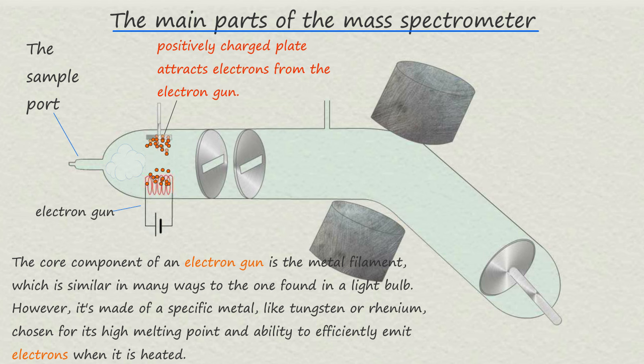These electrons can be thought of as small bullets or billiard balls and they will be able to knock electrons off the sample molecules resulting in the formation of positively charged ions.